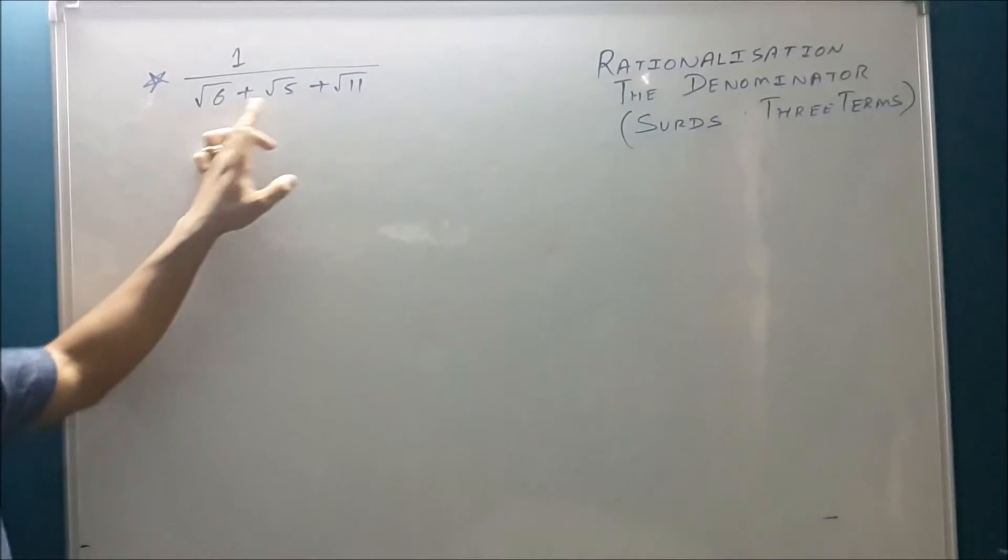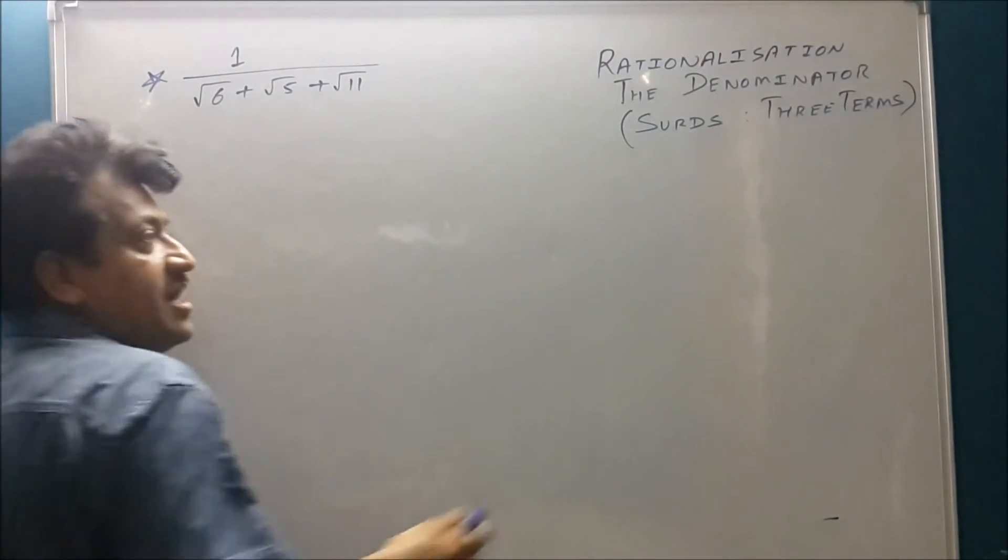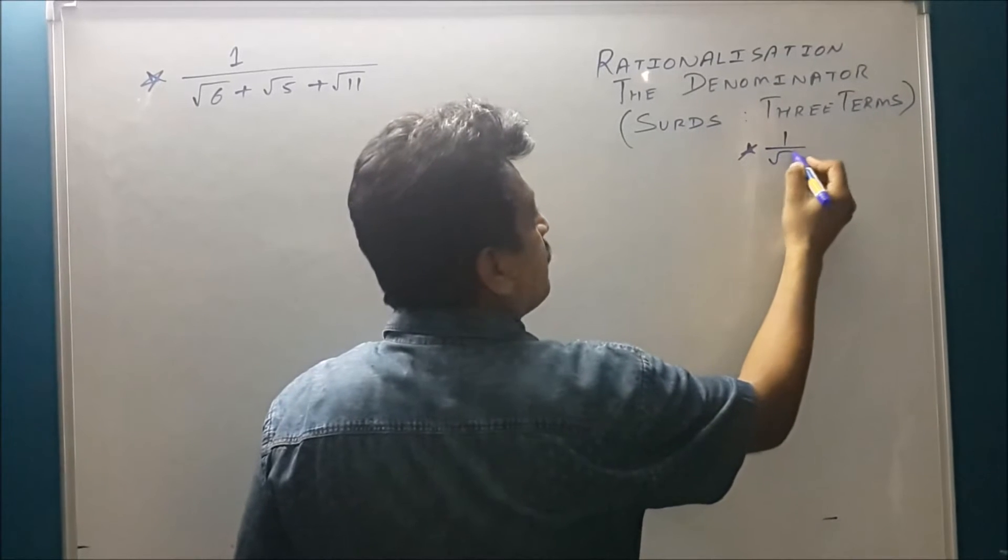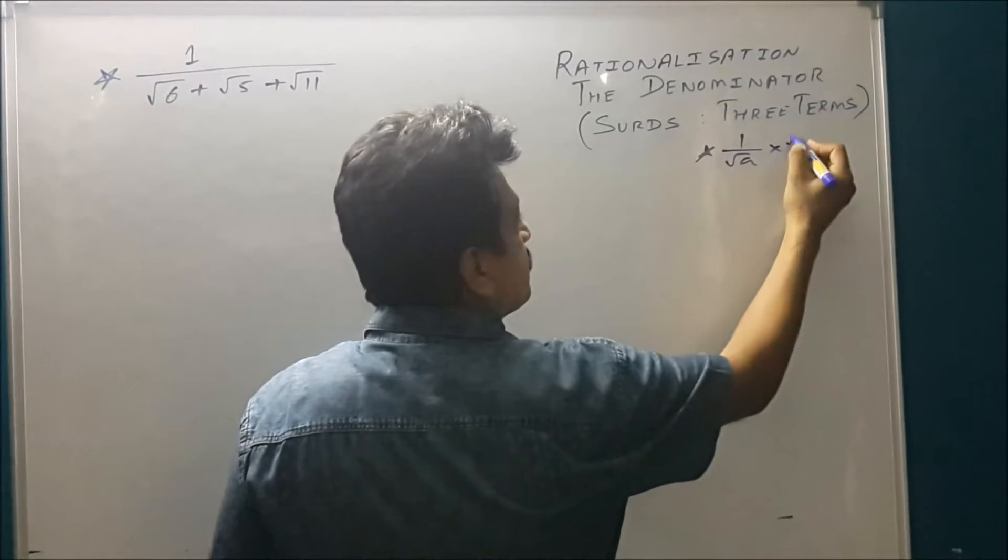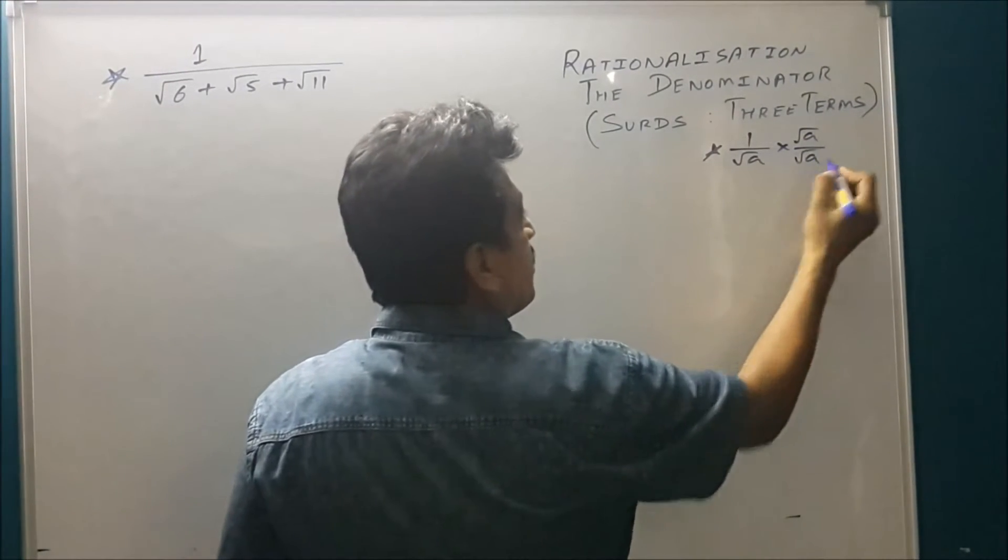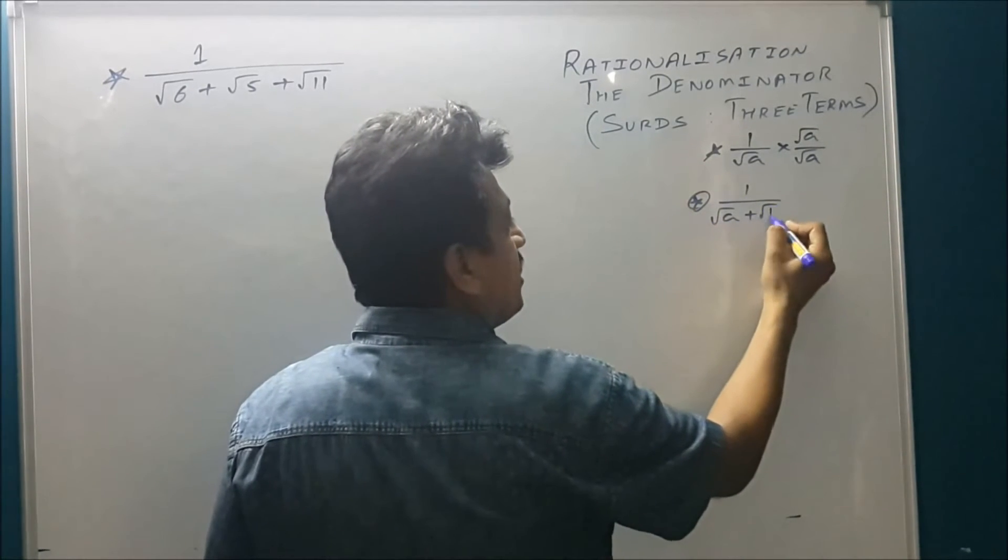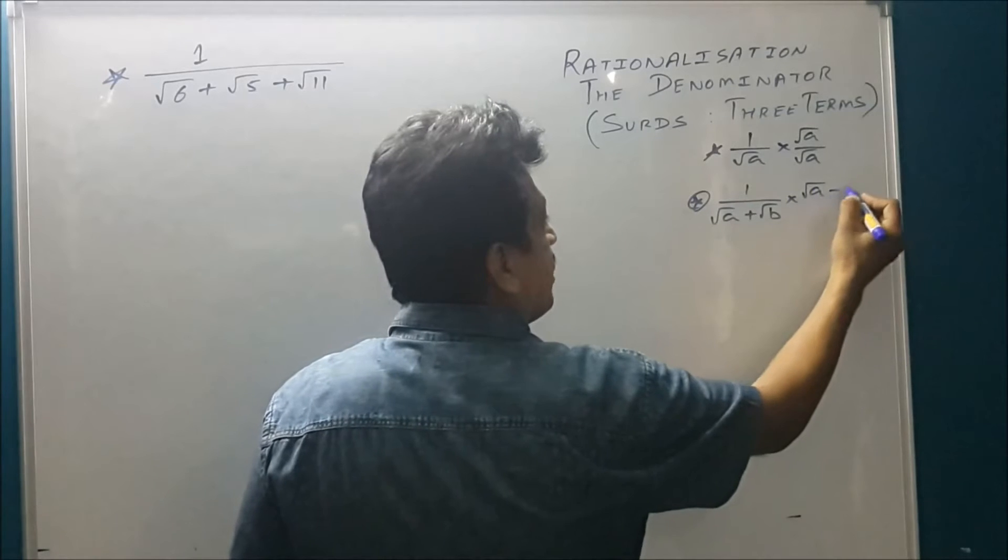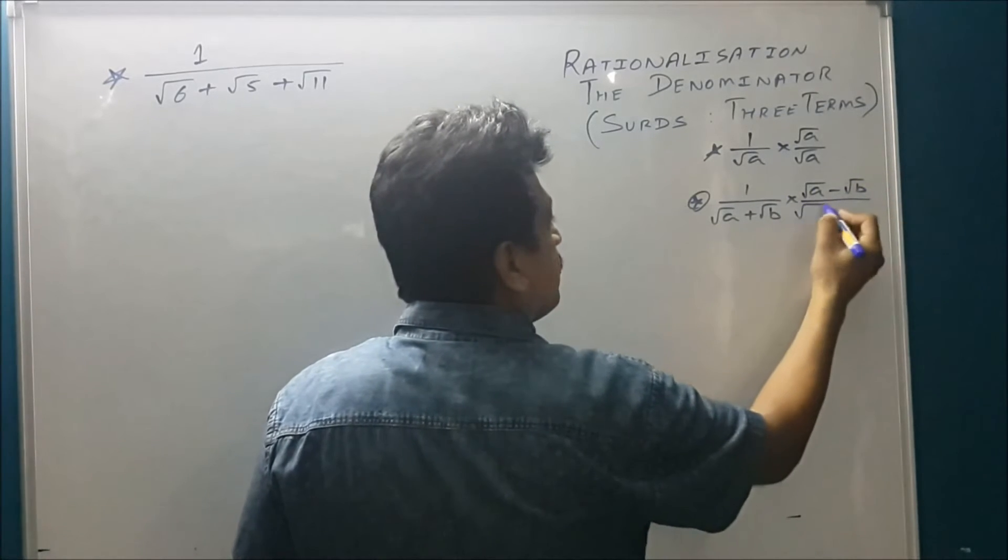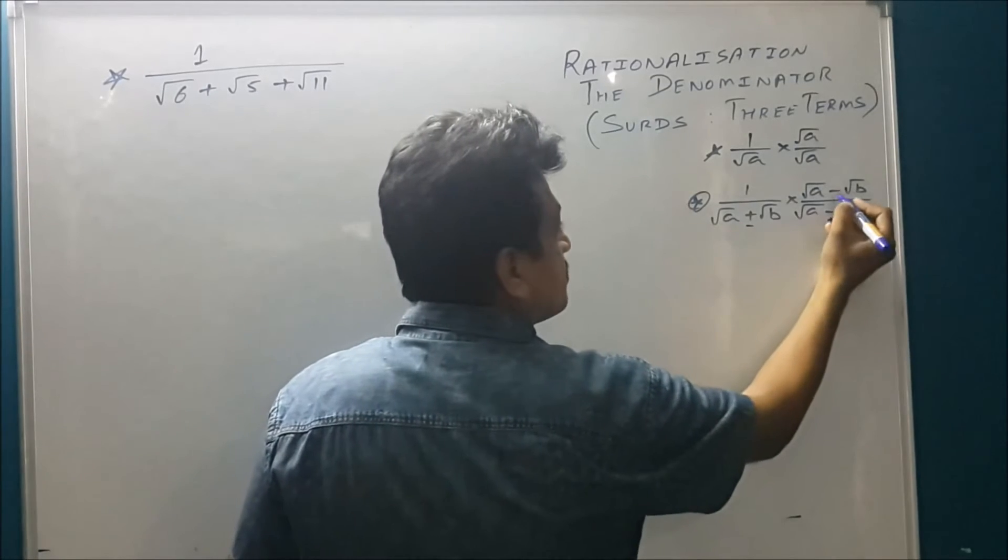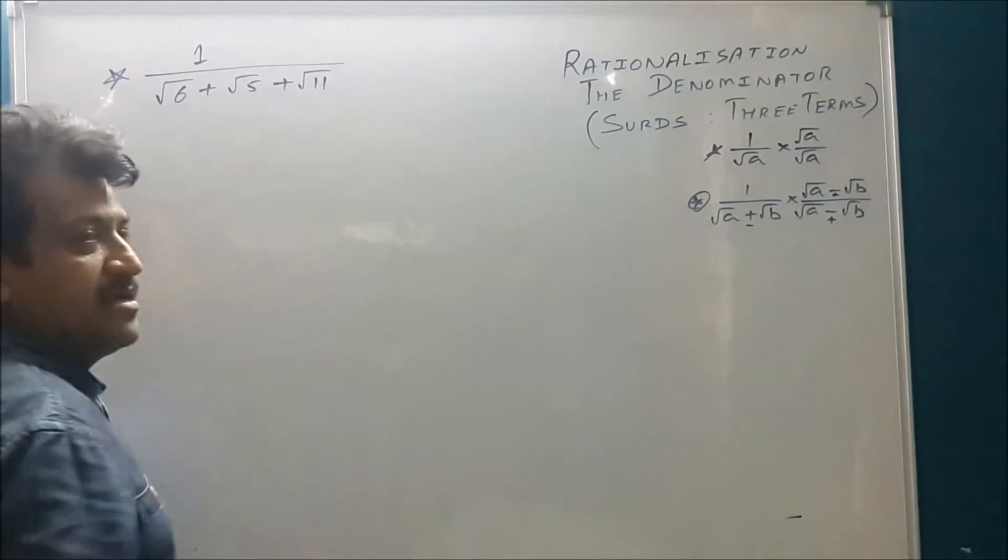Here you go, one, two, three. Everybody knows that if there's a monomial you multiply 1 by root A to rationalize root A by root A, and for binomial root A plus root B is root A minus root B upon root A minus root B. If it is minus you can put here plus. Got it. It's a conjugate.